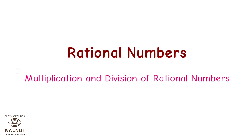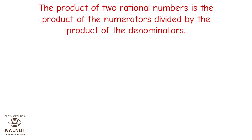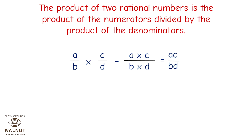Rational Numbers — Multiplication and Division of Rational Numbers. The product of two rational numbers is the product of the numerators divided by the product of the denominators. That is: a/b × c/d = (a×c)/(b×d) = ac/bd, where b ≠ 0 and d ≠ 0.